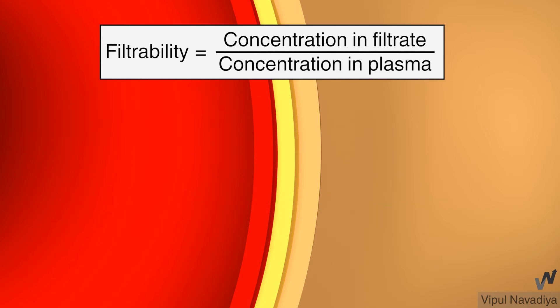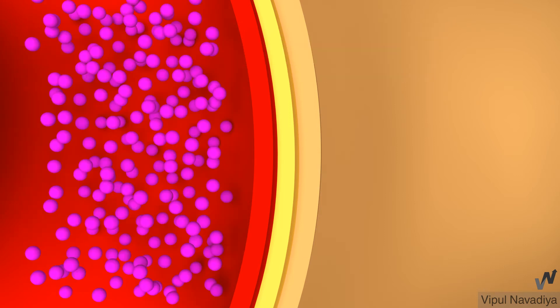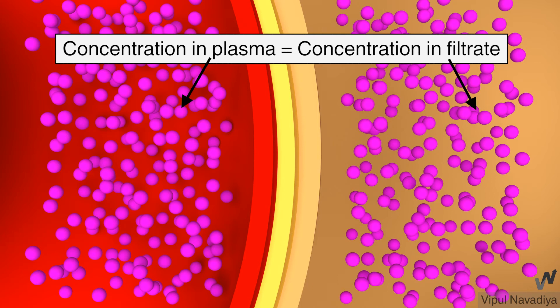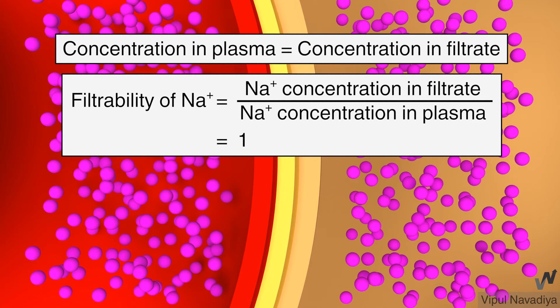The filterability of a substance is expressed as ratio of its concentration in filtrate to that in plasma. Let's take example of sodium ions. If they are very small in size, they are filtered freely. So they achieve same concentration in filtrate as in plasma. So filterability of sodium ions is 1.